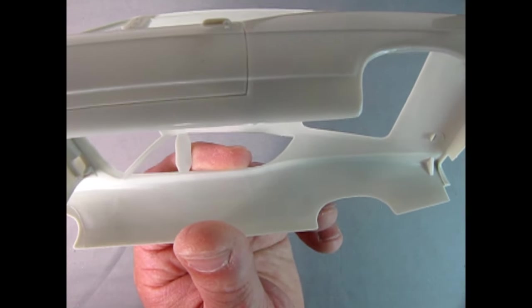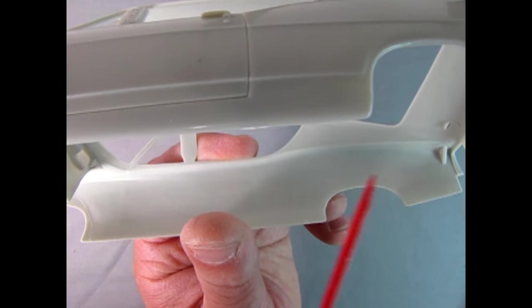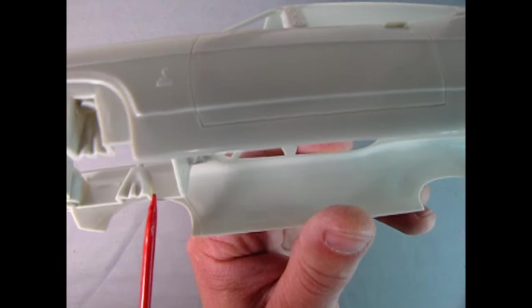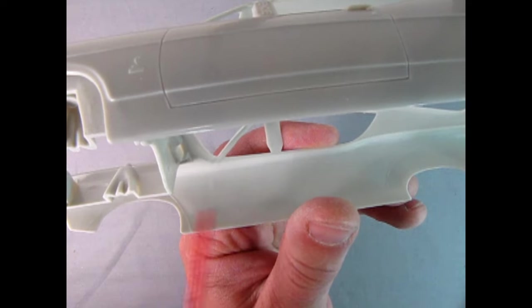Looking at the inside of the body, you will notice some lines around the wheel arches. This is to radius the wheel arches to fit in the NASCAR tires.